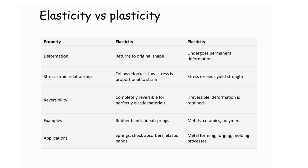In the table here, we compare the properties of elasticity versus plasticity in terms of deformation. For elasticity, the material will return to its original shape. For plasticity, it will undergo permanent or plastic deformation. In terms of stress-strain relationship, elasticity follows Hooke's law where stress is proportional to strain, while for plasticity the stress will exceed the yield strength.